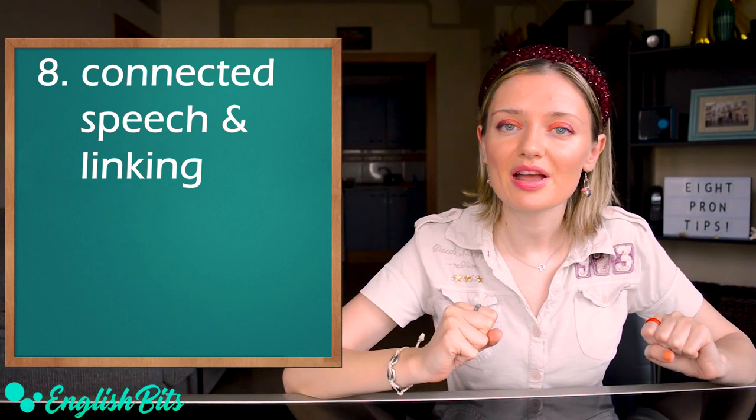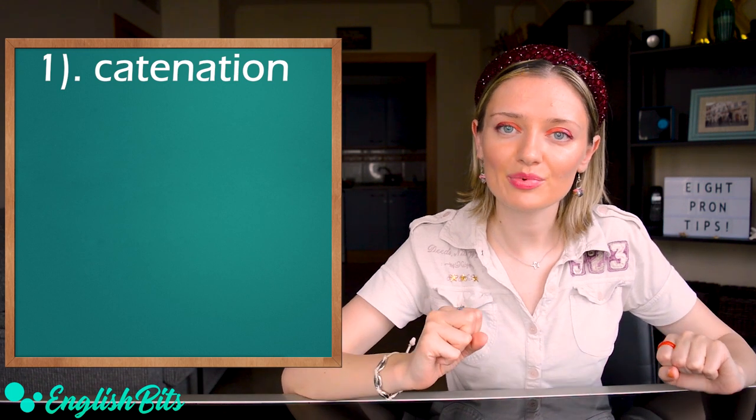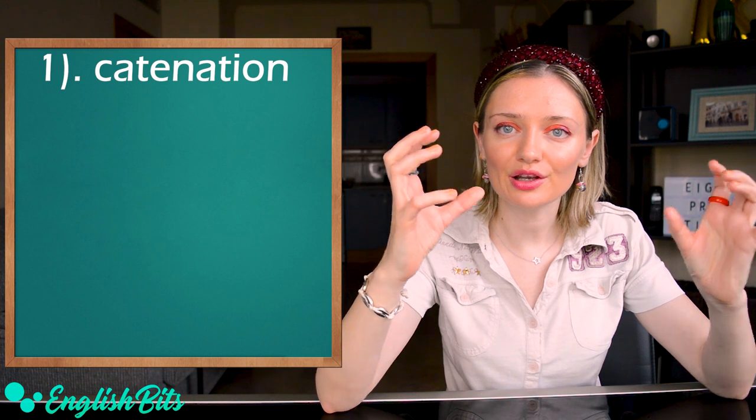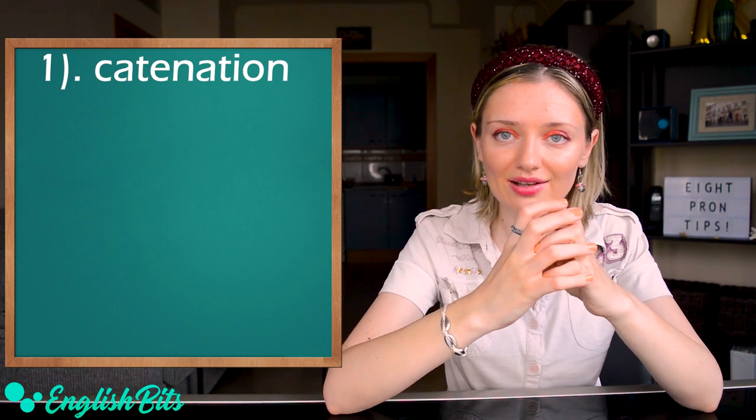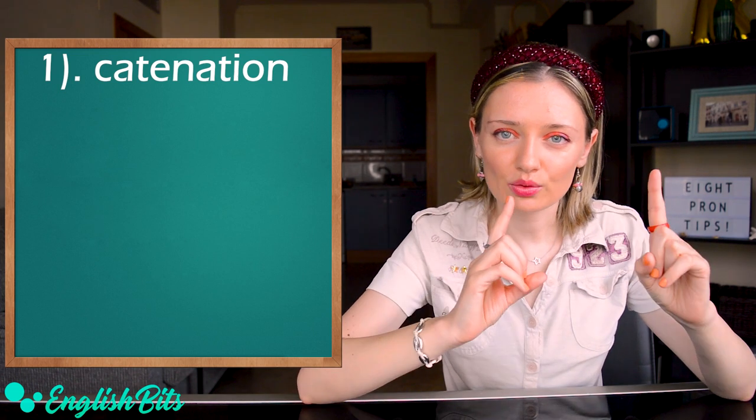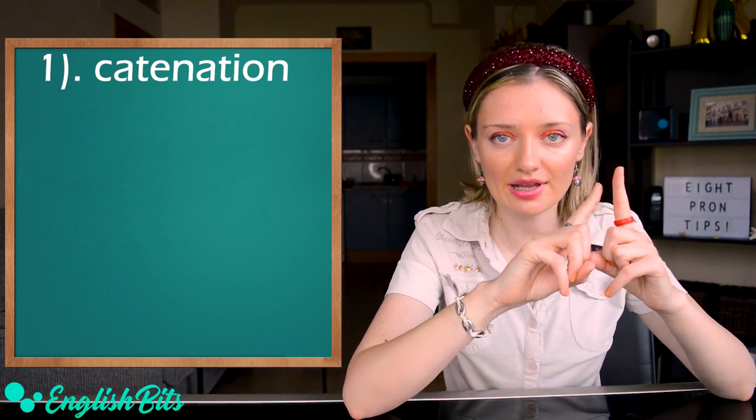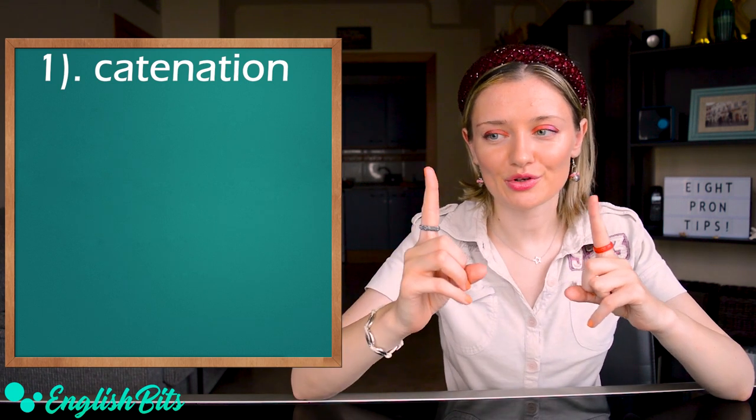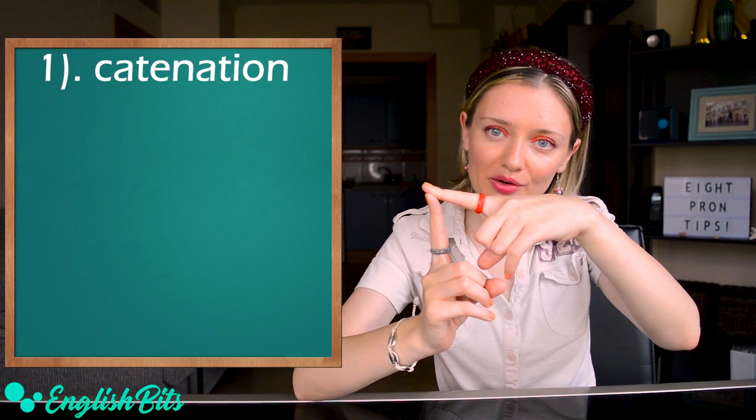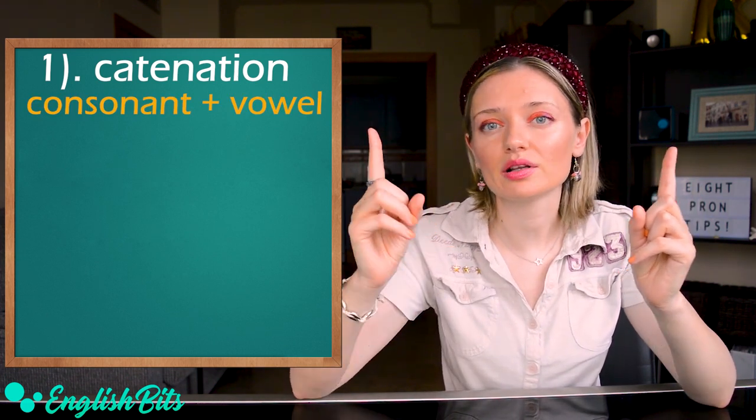So the first type is catenation. It happens when the end of one word blends into another and it sounds like one word. The last sound of the first word has to be consonant and the first sound of the next word has to be vowel. So it's a consonant sound plus a vowel sound.